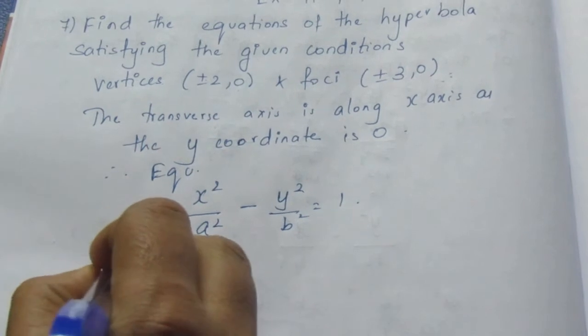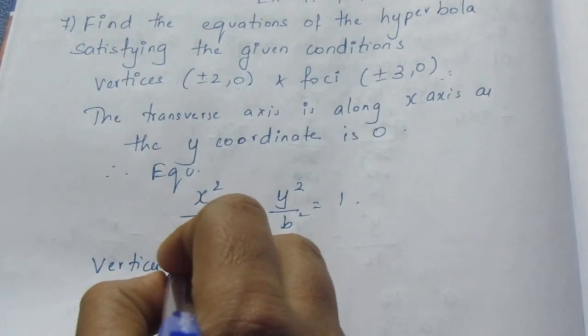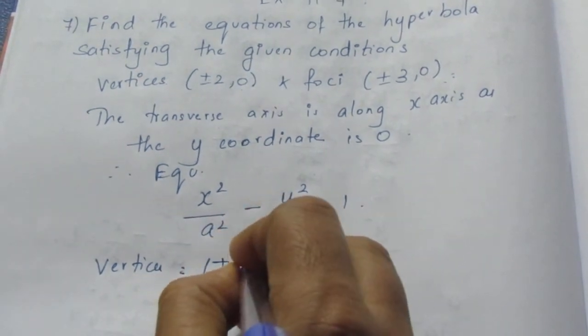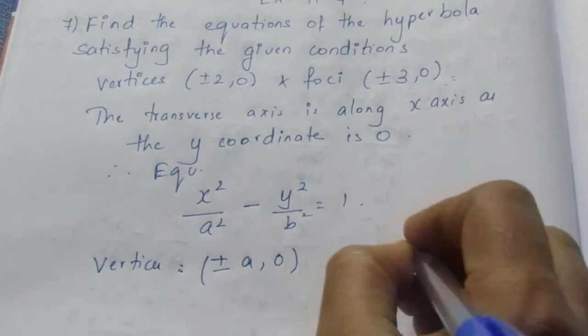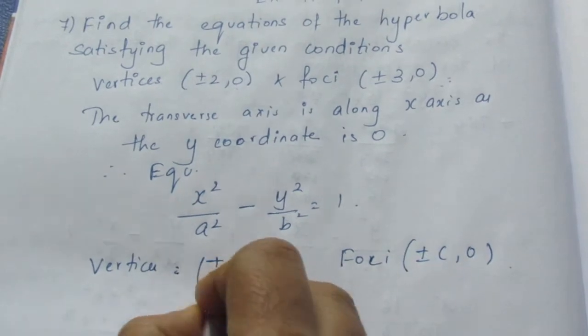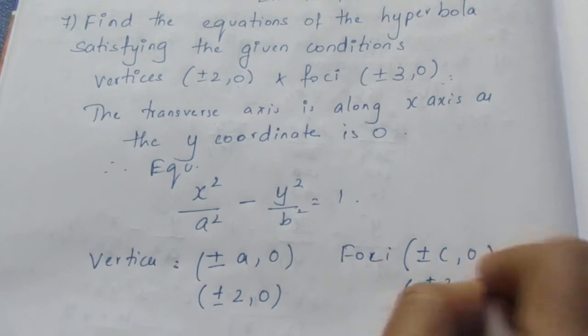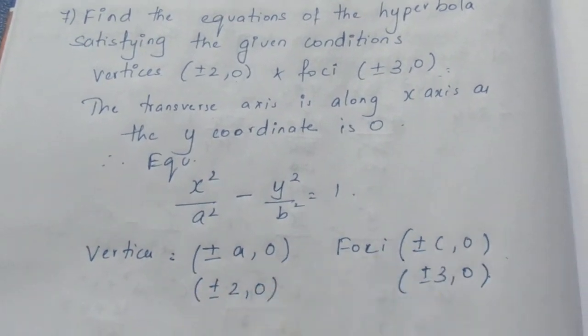Now we have given vertices. Usually the vertices formula will be (±a,0) and foci will be (±c,0). Here instead of a we have (±2,0) and here (±3,0). So from this we can understand that a = 2 and c = 3.